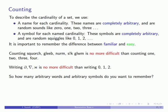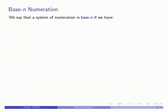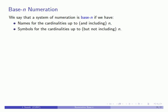And so the question that we have to answer is how many arbitrary words and arbitrary symbols do you want to have to commit to memory? To answer this question we'll need to introduce a few terms. We'll say that a system of numeration is base n if we have names for the cardinalities up to and including n and we have symbols for the cardinalities up to but not including n.